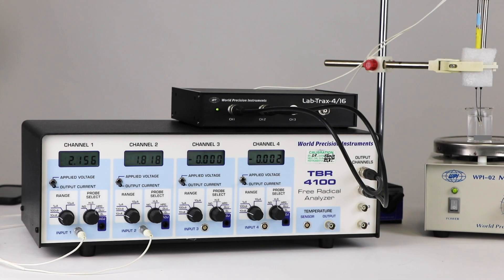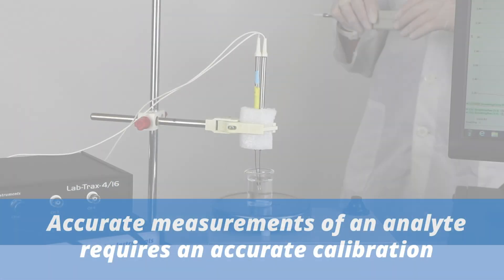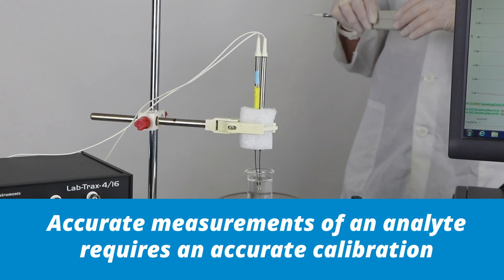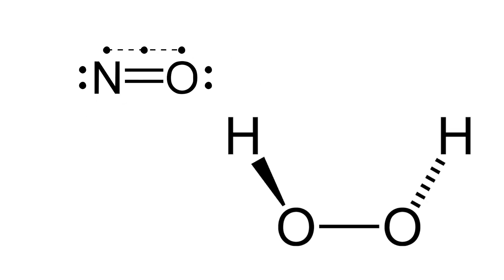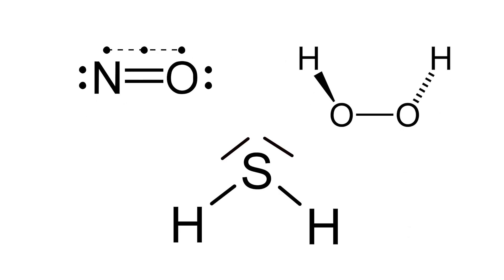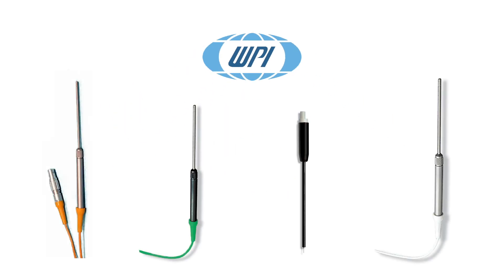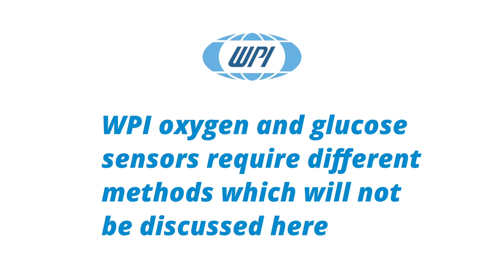When using a TBR free radical analyzer, accurate measurements of an analyte require an accurate calibration. The calibration of nitric oxide, hydrogen peroxide, and hydrogen sulfide sensors is very similar. WPI oxygen and glucose sensors require different methods, which will not be discussed here.